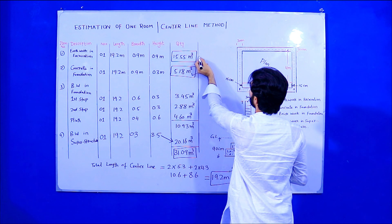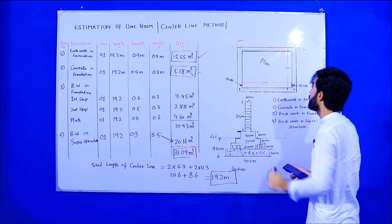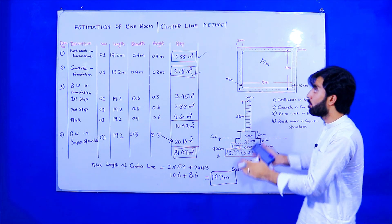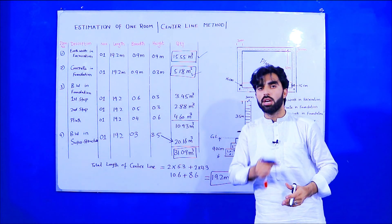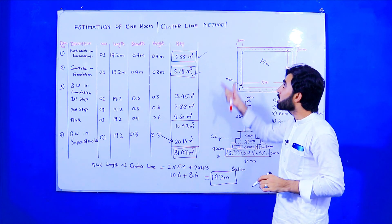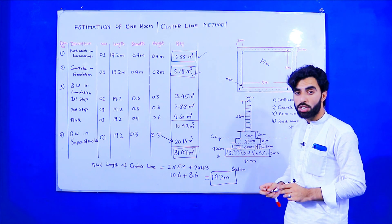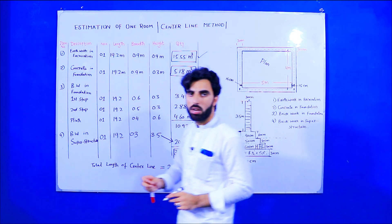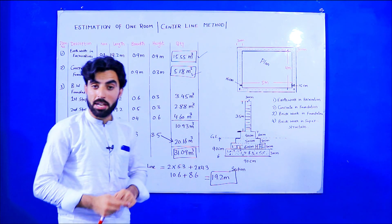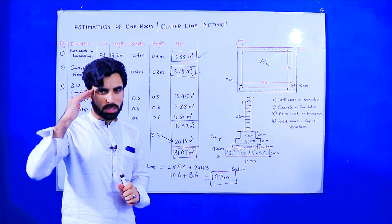This is the total excavation, concrete, and brickwork for one room of 5 meters length and 4 meters width. The same formula can be used for two-bedroom or three-bedroom projects. The centerline method is very efficient for finding quantities of different materials for a building. If you have any questions, please comment. If this video was helpful, don't forget to like. Thanks for watching — see you in the next video, goodbye.